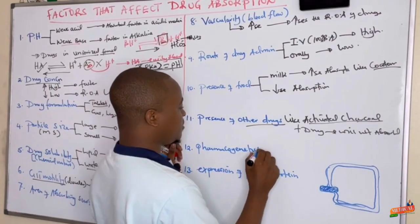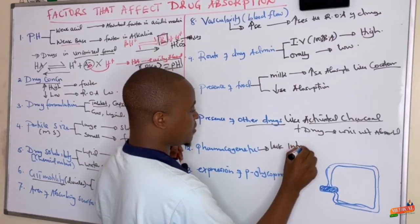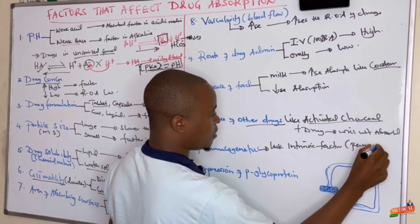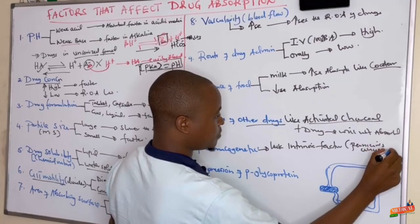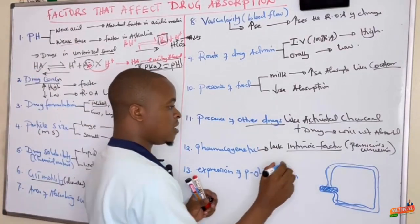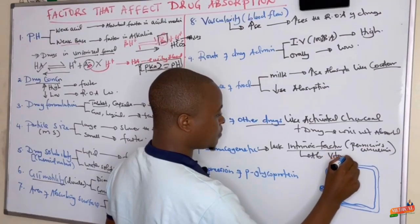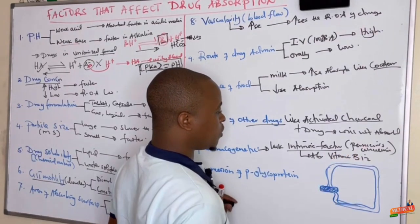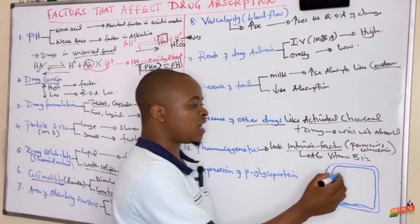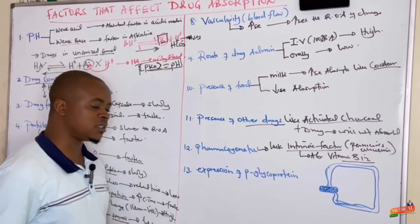Pharmacogenetic factors also play a role. For example, people who lack intrinsic factor — as seen in pernicious anemia — have parietal cells in the stomach that are not producing the intrinsic factor responsible for absorption of vitamin B12. So when someone lacks intrinsic factor, as in pernicious anemia, vitamin B12 cannot be absorbed.